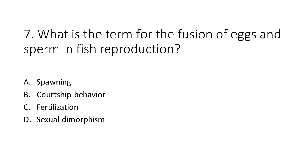Number 7. What is the term for the fusion of eggs and sperm in fish reproduction? a. Spawning. b. Courtship behavior. c. Fertilization. d. Sexual dimorphism.